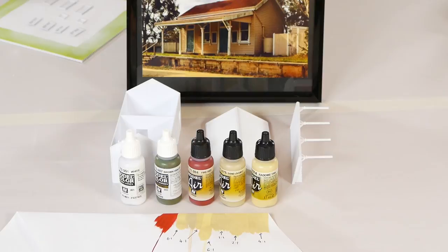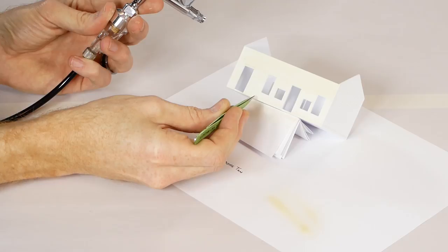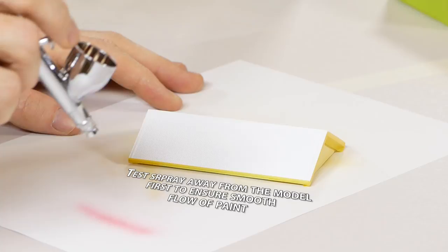My color palette for this model consists of these colors. The main structure was finished with a combination of Vallejo radome tan and Vallejo sand in a mixture of 2 to 1 on the final coat. Just watch out for any stray bits of dust and hair.